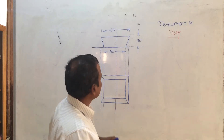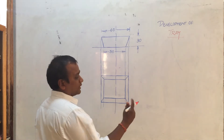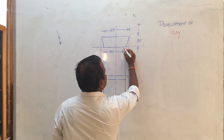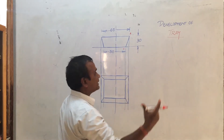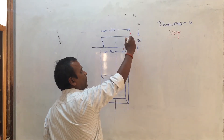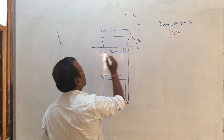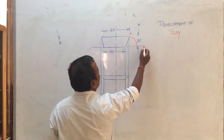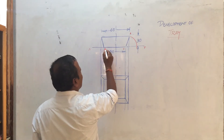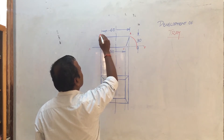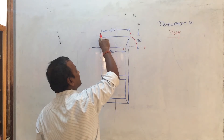Simple procedure — just follow these steps. Take a compass, measure a distance of O and A, then again take a compass, measure a distance of O and A and draw an arc that cuts this line — I call this the X-Y line. In a similar way on this side, take O and B, measure distance O-B, and draw an arc on this side.